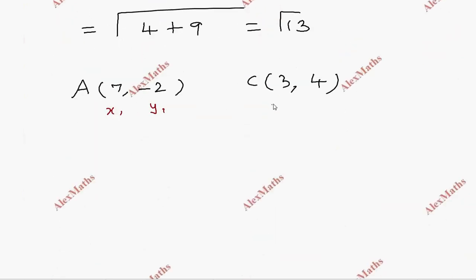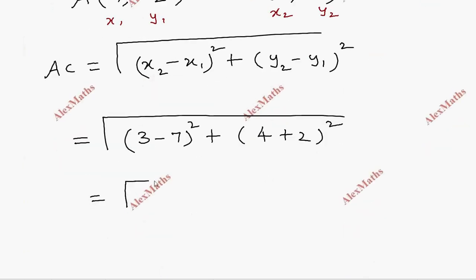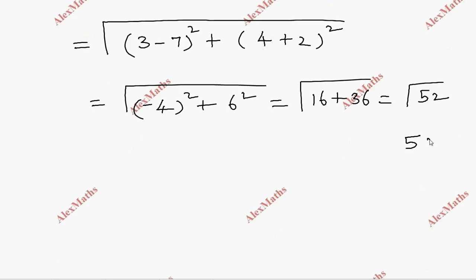AC equal to root of x2 minus x1 whole square plus y2 minus y1 whole square, the root of 3 minus 7 whole square plus 4 minus minus 2 whole square. Root of minus 4 whole square plus 6 square, root of 16 plus 36, which is 52. So root 52, factorized is 2 times 26, 2 times 13, that means root of 2 into 2 into 13, which is 2 root 13.